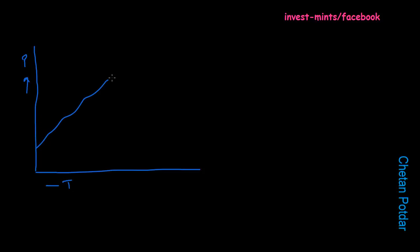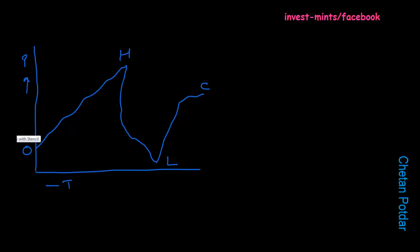Price moves up to the highest point, lowest point, and finally closes. So this is open, this is high, this is low, this is close. Because the price is eventually moving up — from open to close the price is moving up — the candle is going to be green.